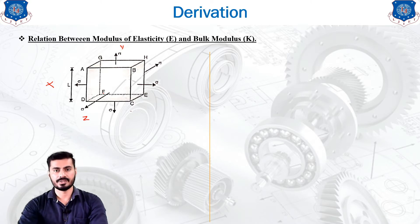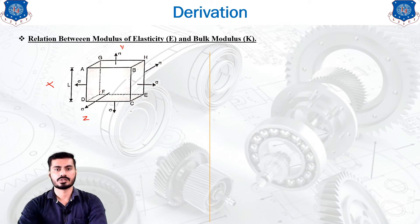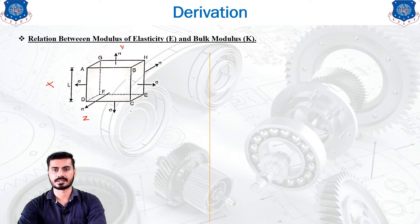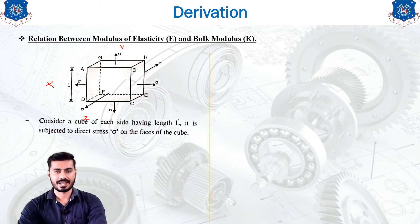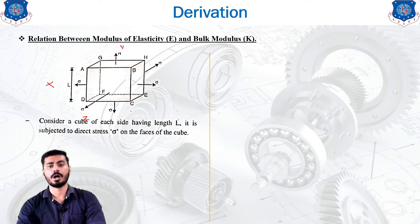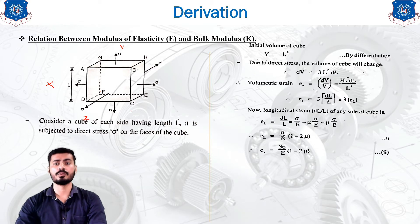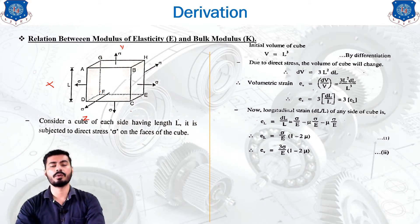Each stress is of equal intensity and we will denote this stress value as Sigma. The corner points of the block are represented as A, B, C, D, E, F, G, H — just to identify the planes on which we have applied the different types of stresses. Consider a cube of each side having length L which is subjected to a direct stress of Sigma on the faces of the cube. The initial volume of the cube is V equals L cubed.